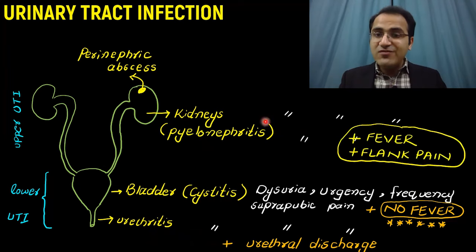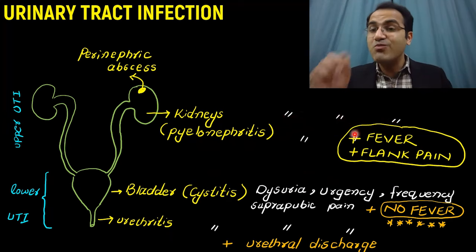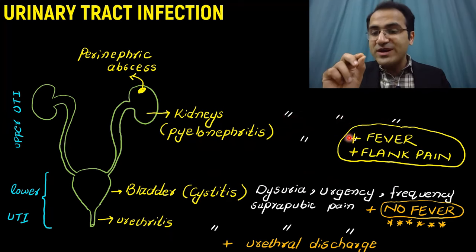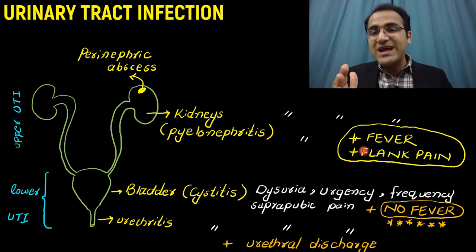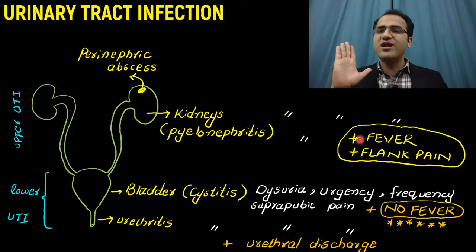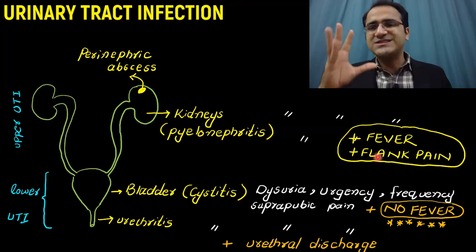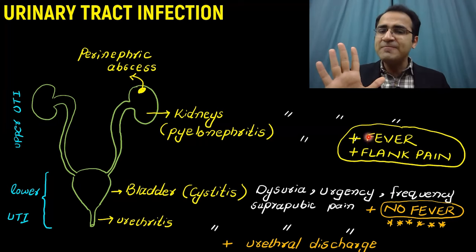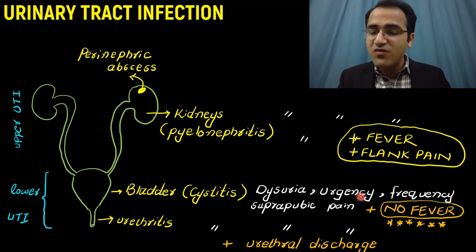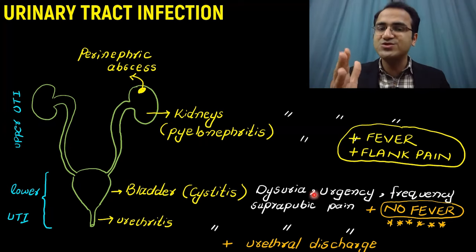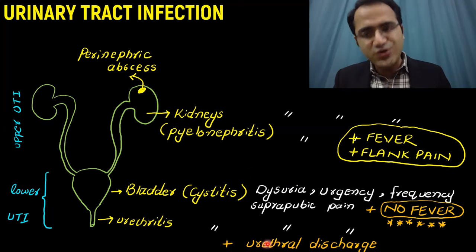Pyelonephritis also has the same symptoms — dysuria, urgency, frequency — but instead of suprapubic tenderness, the patient will have flank pain along with high spiking fever. That is what differentiates it from cystitis. So: fever with flank pain and burning micturition = pyelonephritis; no fever with suprapubic pain and burning micturition = cystitis; urethral discharge = urethritis.